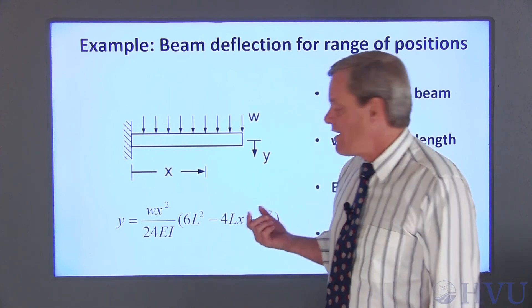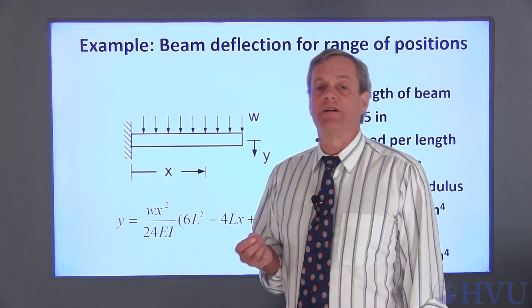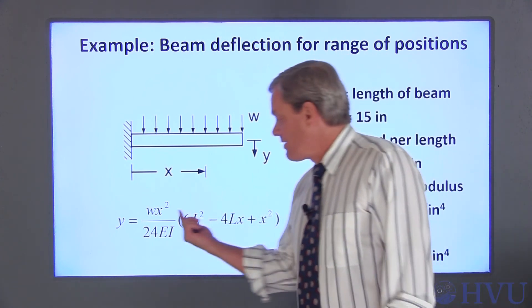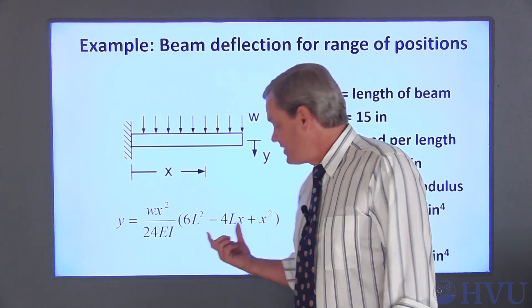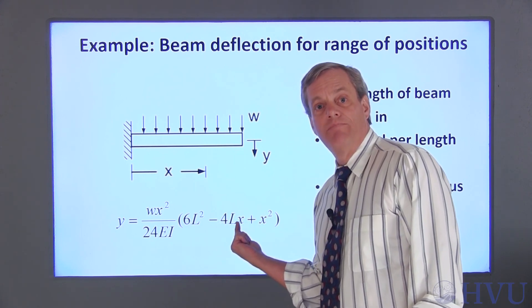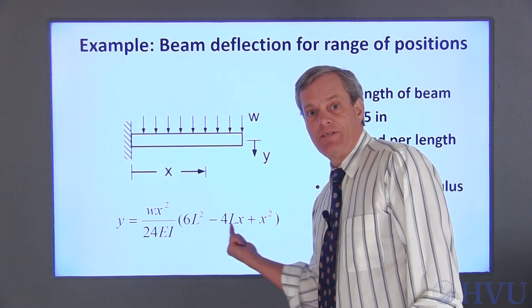That means when we square X here and here, we need to square the values in X on an element-by-element basis. So we need to use a dot caret operator here and here. In this term, we're multiplying a scalar, 4 times L by an array, X, so this term is an array that's the same size as X.